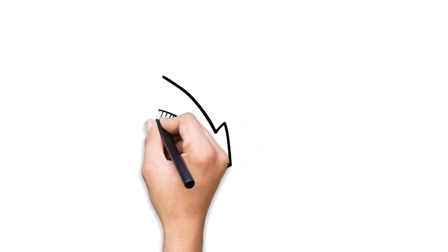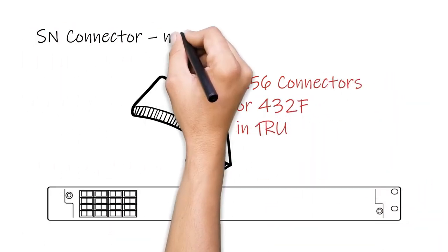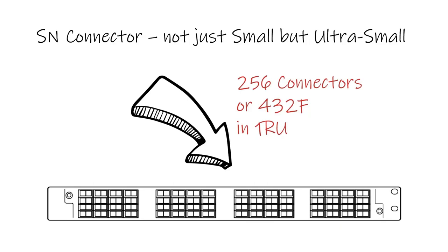With the connector being so small, you can squeeze up to 256 SN connectors in a 1RU shelf, which gives you 432 fiber connections. Why am I thinking of sardines again?